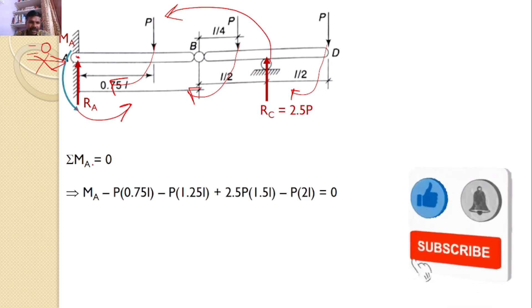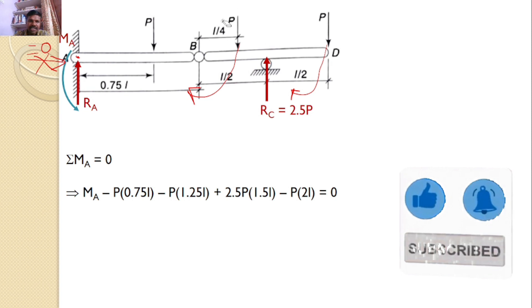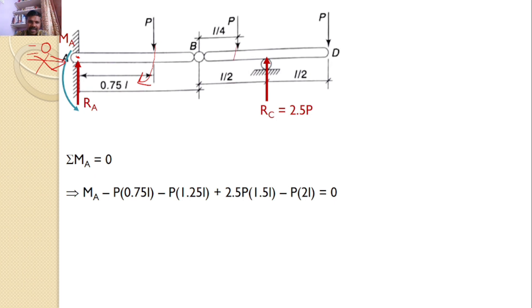Hence, I can say Ma minus P into the distance 0.75 into L, minus P into the total distance L plus L by 4, that is 1.25 L. Then, Rc, that is 2.5P into the total distance L plus L by 2, that is 1.5 L, and minus P into the total distance 2 L.